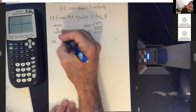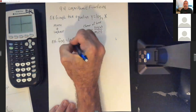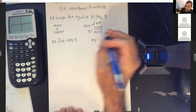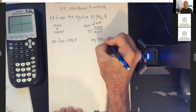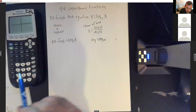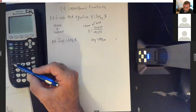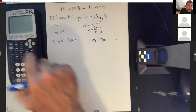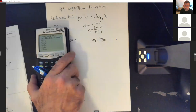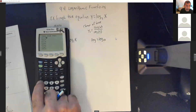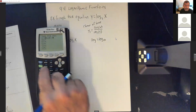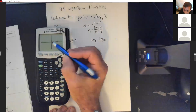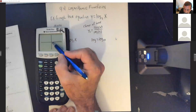Now we'll graph f(x) = log(x). Since there's no number shown, the base is automatically 10. The log button on the front of your calculator is automatically log base 10, so everybody has that button. Go to y equals, clear it out, hit your log button, put in x, close the parentheses, and hit enter. It's very similar to the last graph — comes up the y-axis, crosses at 1 on the x-axis, and slowly grows.